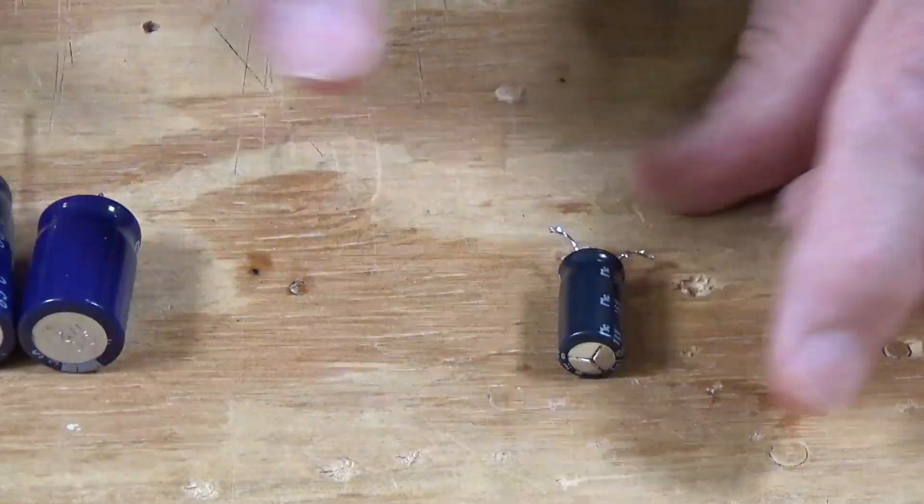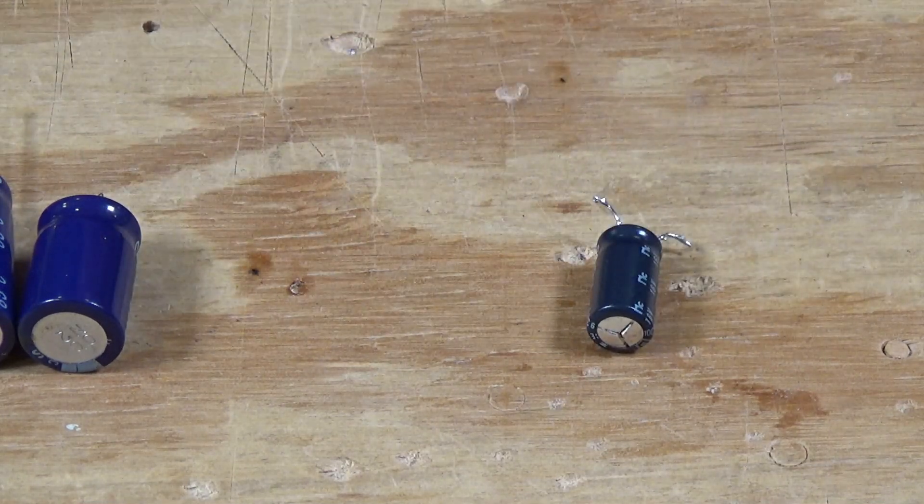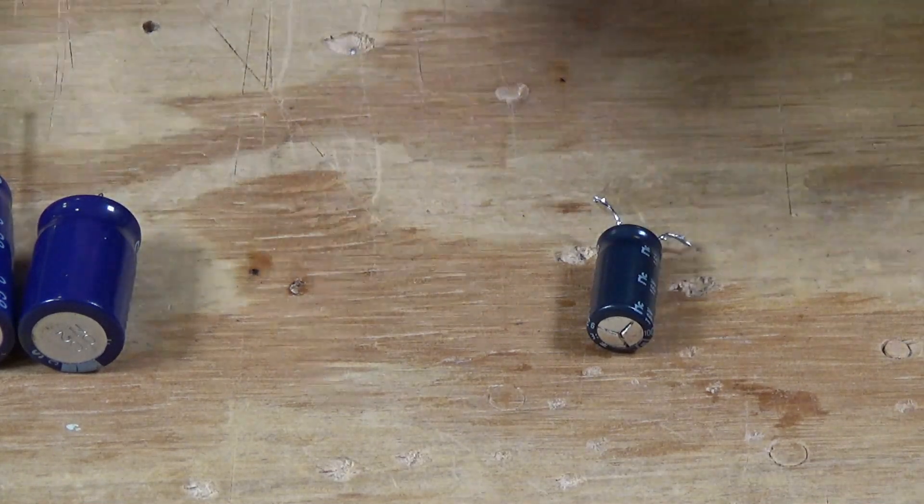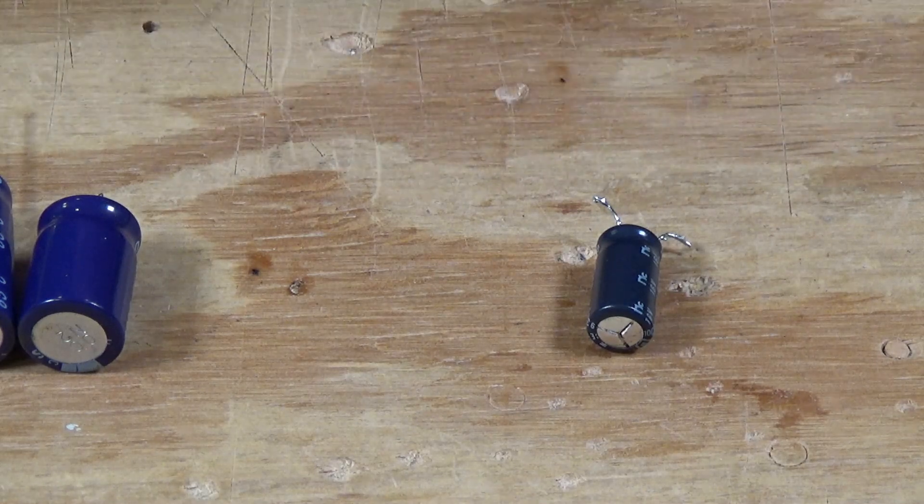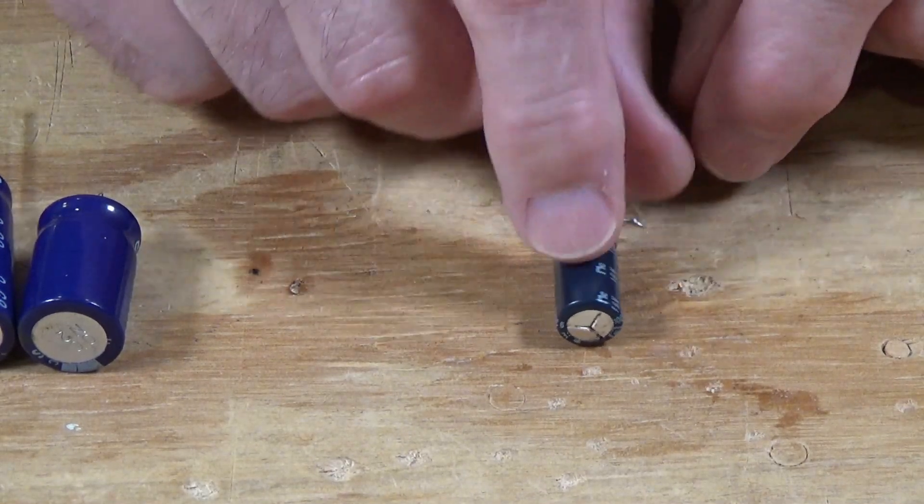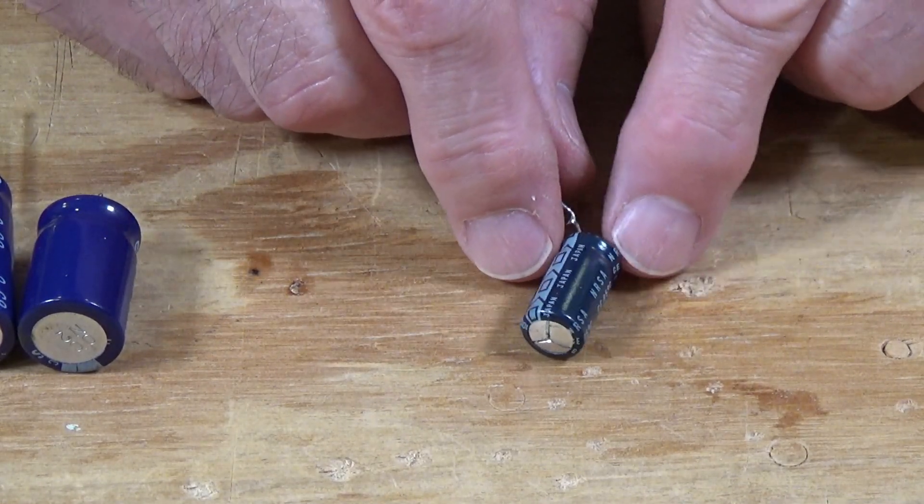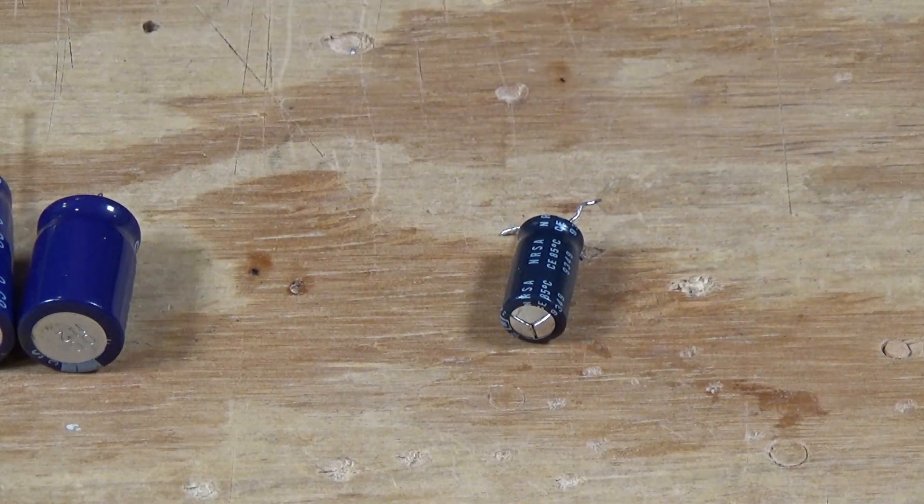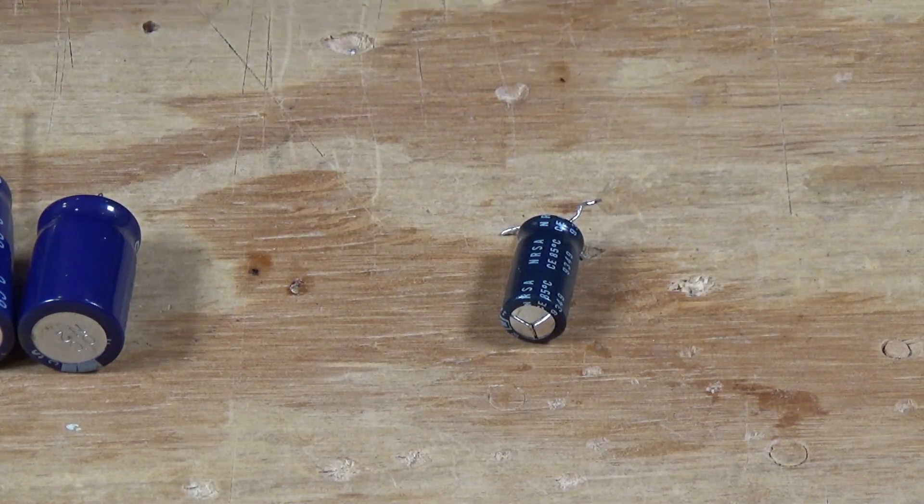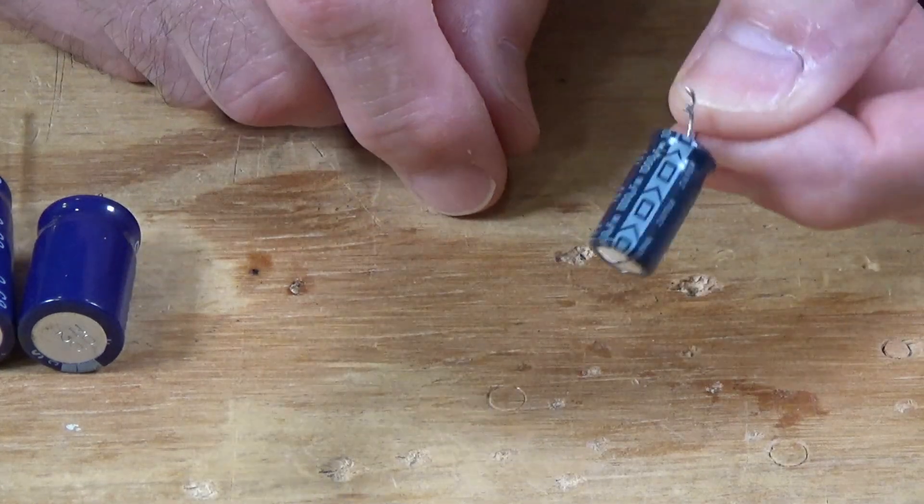In most cases, this guy right here is going to be more than enough, simply because you just need the lights to not flicker. So that's all that this needs to do. It only has to be big enough to fill in the gaps when power is disrupted momentarily. And that's what this guy will do.